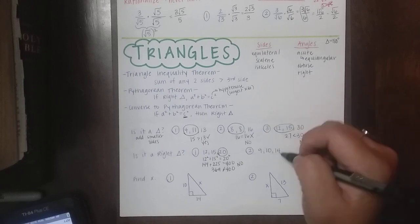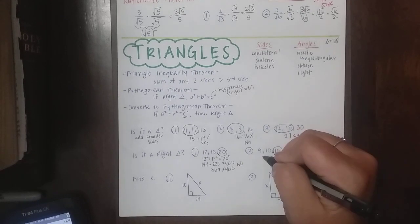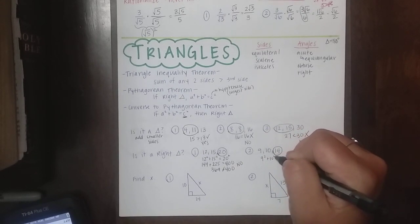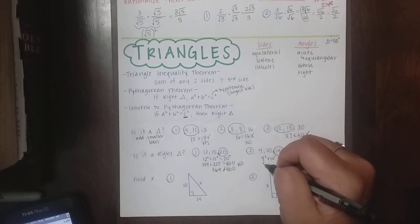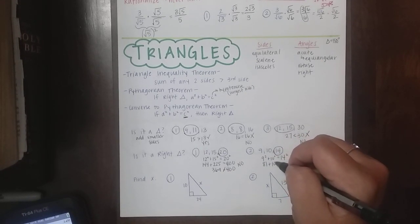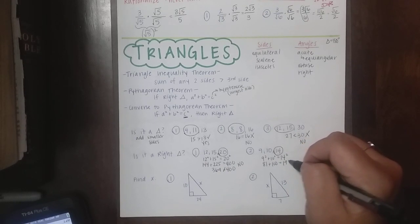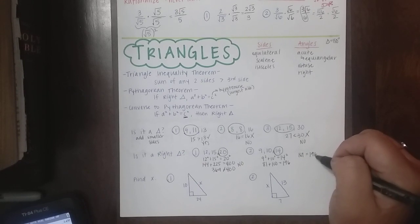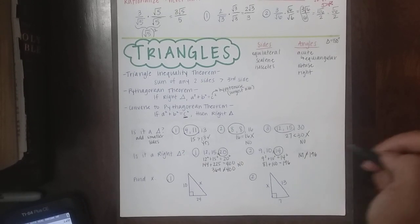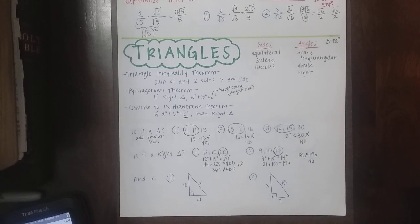So for the second one, 14 is my biggest side. So we're going to say 9 squared plus 10 squared has to equal 14 squared if it's going to be a right triangle. So we have 81 and 100 and then 14 squared is 196. So this one ends up with 181 equals 196. So it's close, but no cigar. So that one's also not a triangle. I'm sure I meant to have one of those be a right triangle, but they didn't work out. So if it's equal, it's going to be a right triangle. If it's not, it is not a right triangle.